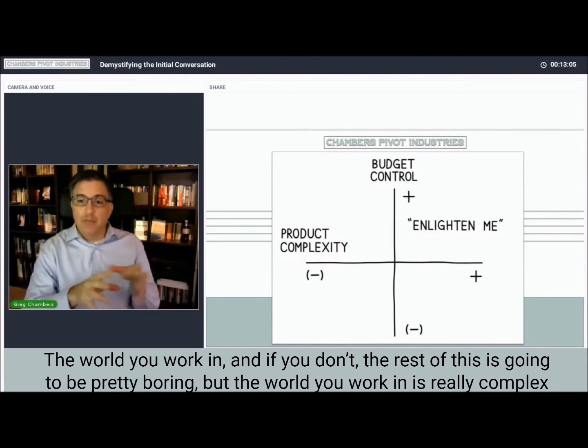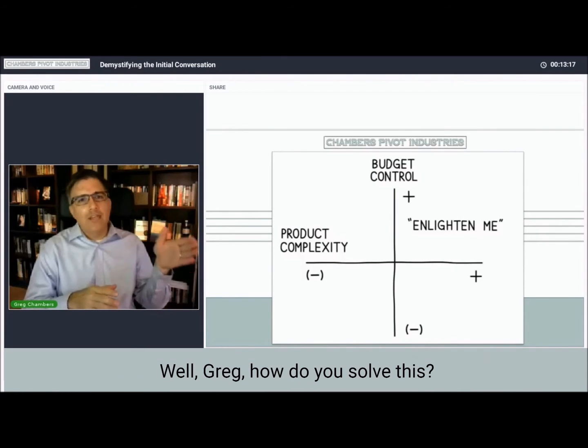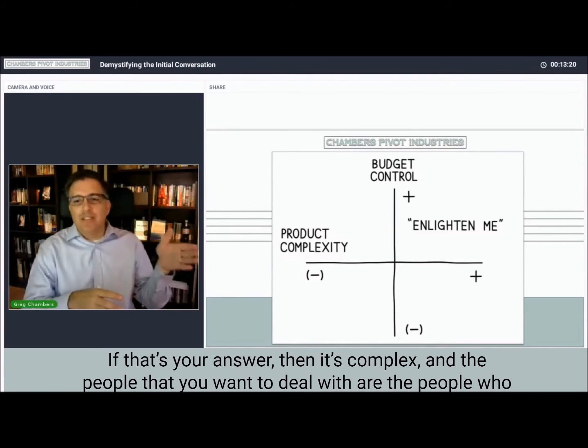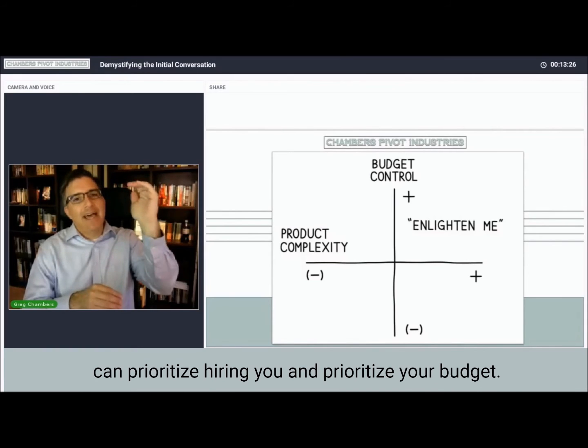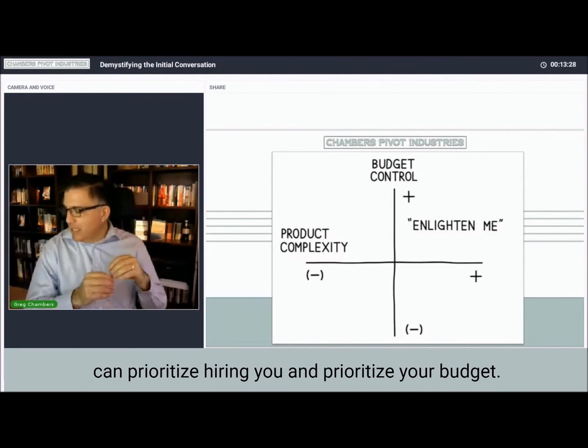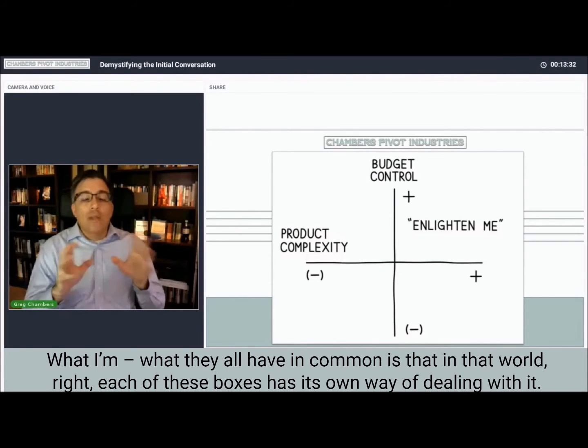The world you work in is really complex products, so out there on the tip of product complexity, because everything you do is customized and it really depends. If 'well, it depends' is your answer, then it's complex. And the people that you want to deal with are the people who can prioritize hiring you and prioritize your budget. So what they all have in common is that in that world, each of these boxes has its own way of dealing with it.